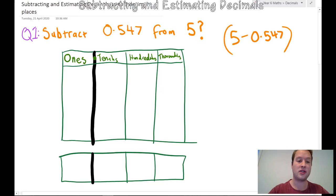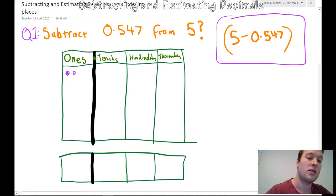So here I've got a place value chart and we have a question here. It says subtract 0.547 from 5. So 5 is a whole number in the ones column. I've rewritten it here. So let's draw it out. I need five ones. I am going to just do them as dots. So 1, 2, 3, 4, 5. Here's my five ones.